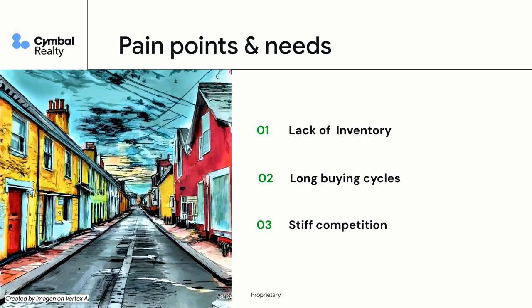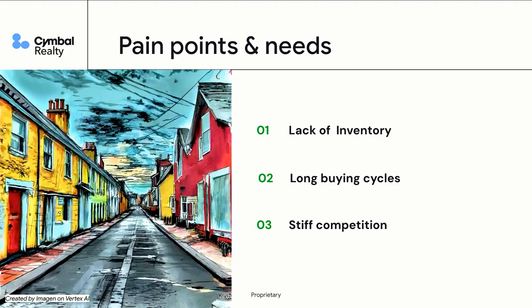Let's pick three headwinds. One of the biggest pain points in real estate is lack of inventory — this could be because there's not enough homes on the market, or because you're just not fast enough in creating listings, which is a pretty detailed process. The second is long buying cycles — people are spending huge amounts of money so they do a lot of due diligence, which means longer lead times and maybe low conversion rates. The third is stiff competition — there are newer models of transacting property and new businesses always popping up.